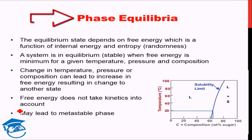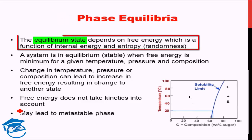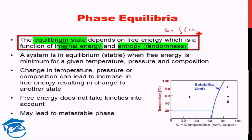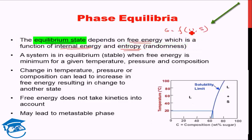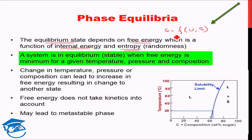What we are going to discuss is phase equilibria — what is the equilibrium state of a system. The equilibrium state of any system depends on the free energy of the system. Free energy G is a function of the internal energy and the entropy of the system. The combination of these gives us the free energy, and that free energy determines the equilibrium scenario of the system.